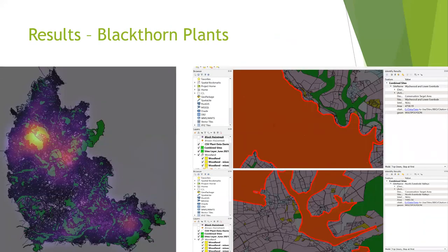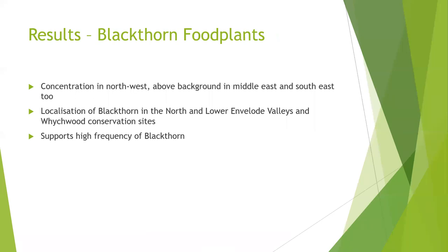Here are the heat maps for the blackthorn stands. Interestingly, there's a localisation of the blackthorn in the north-west of the area, especially at Wykewood and the lower and north envelope valleys. There's a concentration in the north-west and extending above background levels in the middle east and south-east too. The localisation of blackthorn in the north and lower envelope valleys and Wykewood conservation sites supports the fact that a high frequency of blackthorn occurs within protected conservation areas.